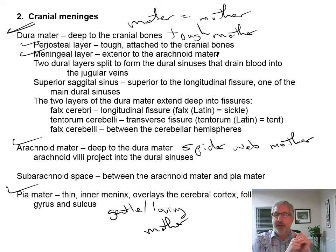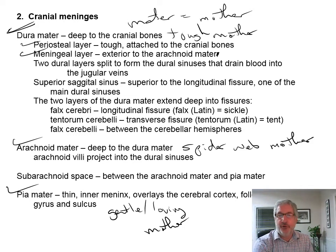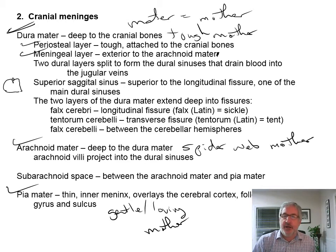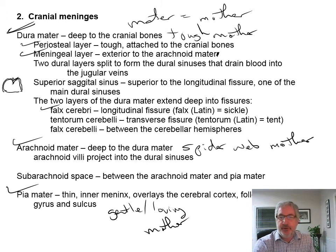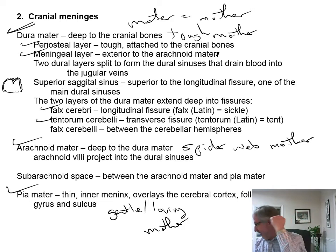The superior sagittal sinus is superior to the longitudinal fissure. The two layers of the dura mater extend deep into the fissures — it's called the falx cerebri, the dura mater that goes down into the longitudinal fissure. There's also the tentorium cerebelli, which goes into the transverse fissure between the cerebellum and the cerebrum. And the falx cerebelli goes between the two hemispheres of the cerebellum.